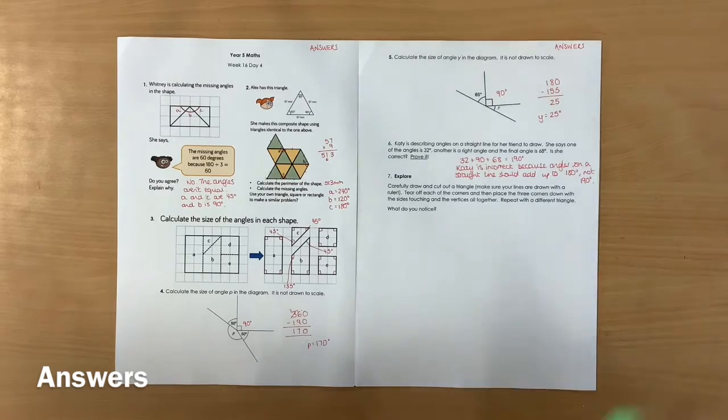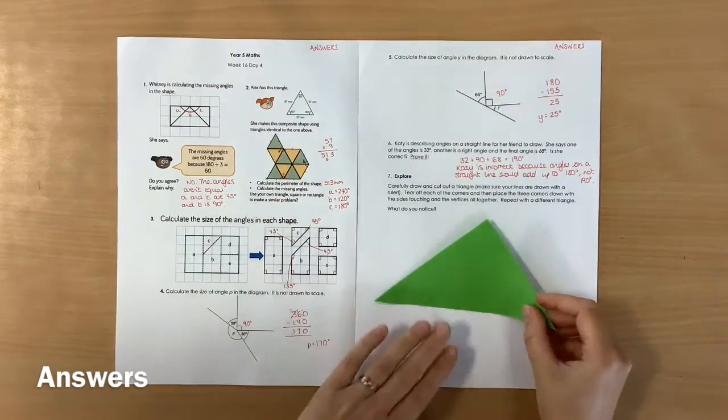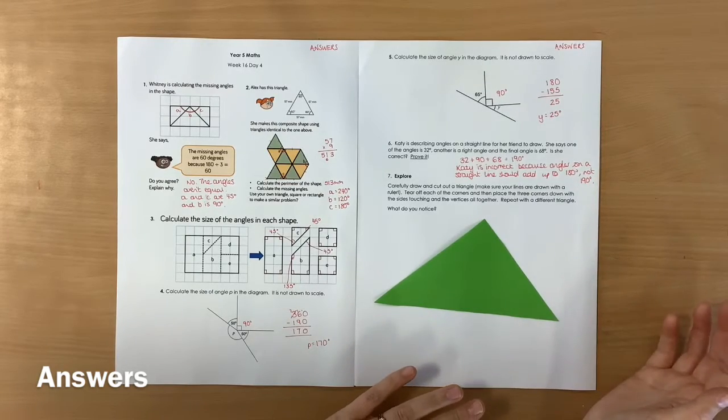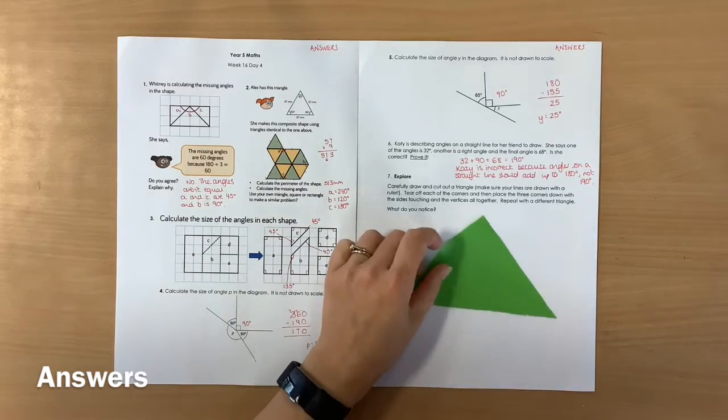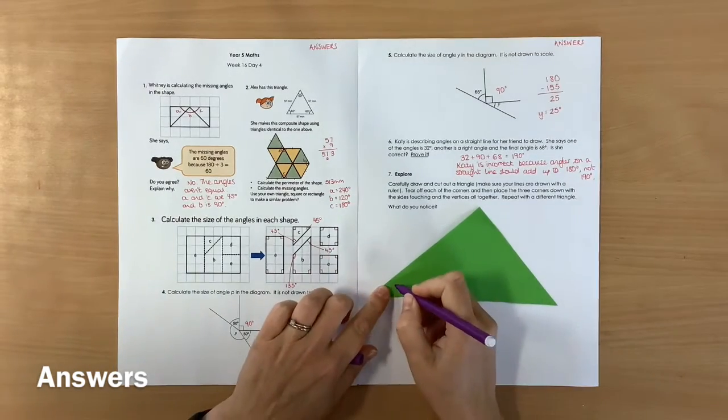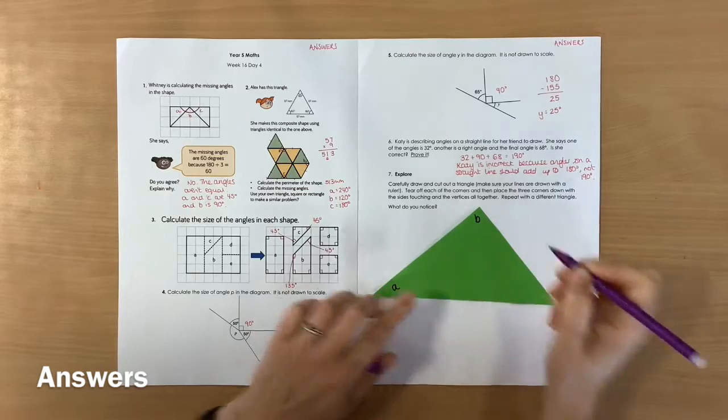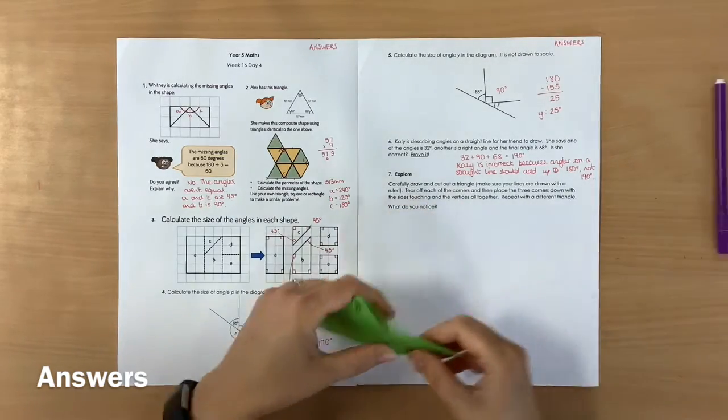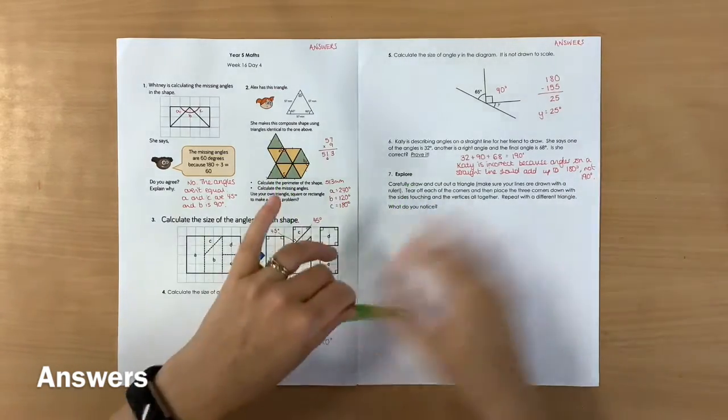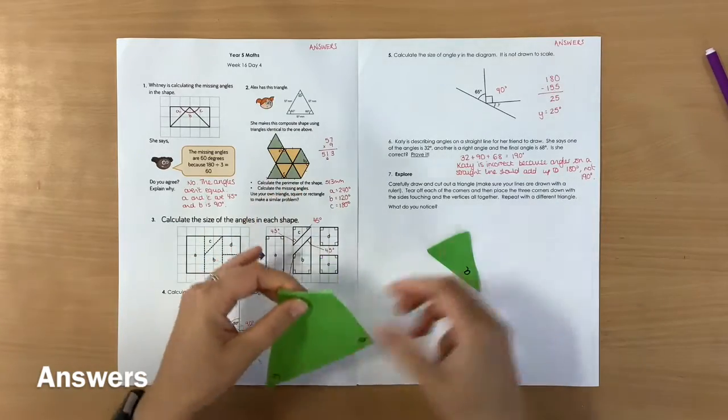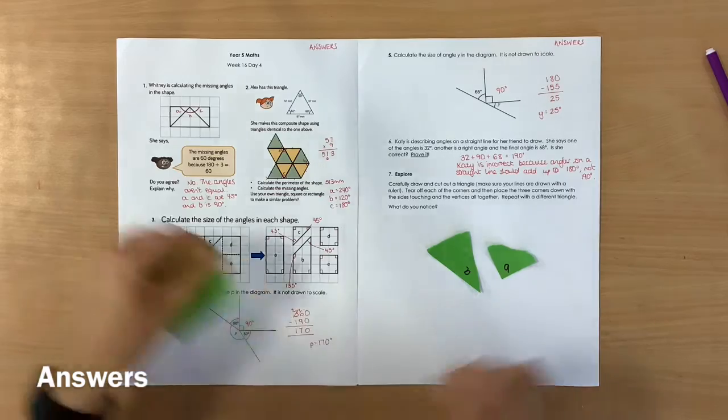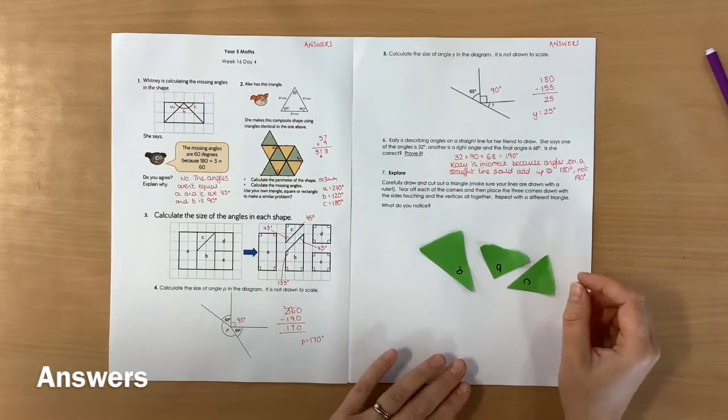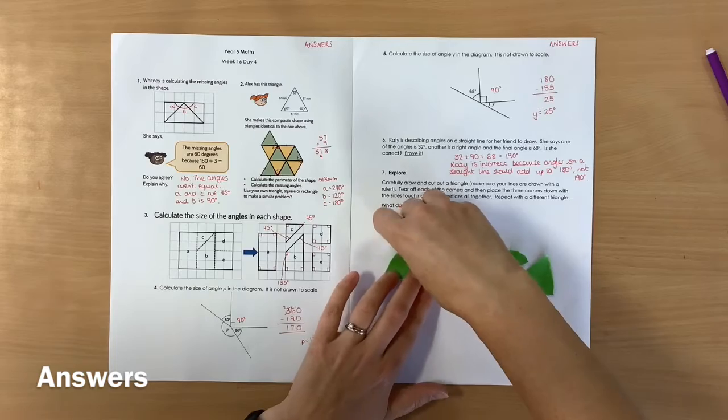So what I asked you to do, hopefully, it's a bit difficult to try to explain, but what I wanted you to do was come up with a triangle, so I've got a green triangle here, tear off each of the corners. So I'm actually going to, so you can see it a bit more clearly, I'm going to call my corners A, B and C and then I'm going to just carefully tear them off. And then I've got to place them down with the sides touching and the vertices all together.